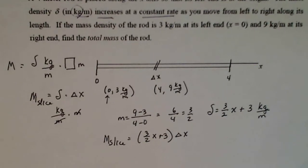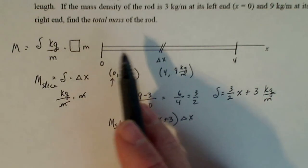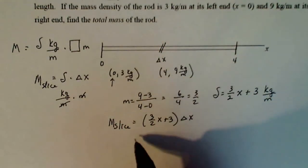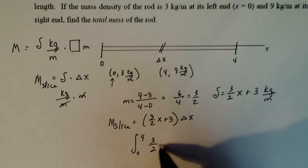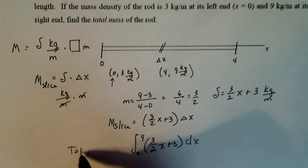Now if I want the total mass of the rod, that's just the mass of one little bit that I've sliced. If I want to add up all the delta x's, I have to integrate or sum up from zero to four, three over two x plus three dx, and that will give me the total mass of my rod.